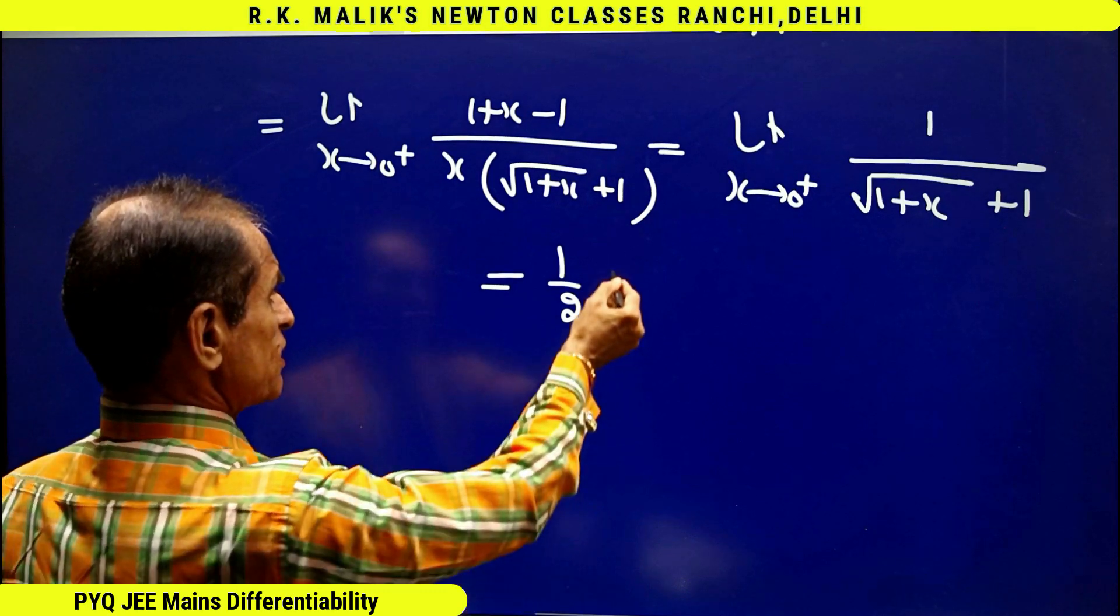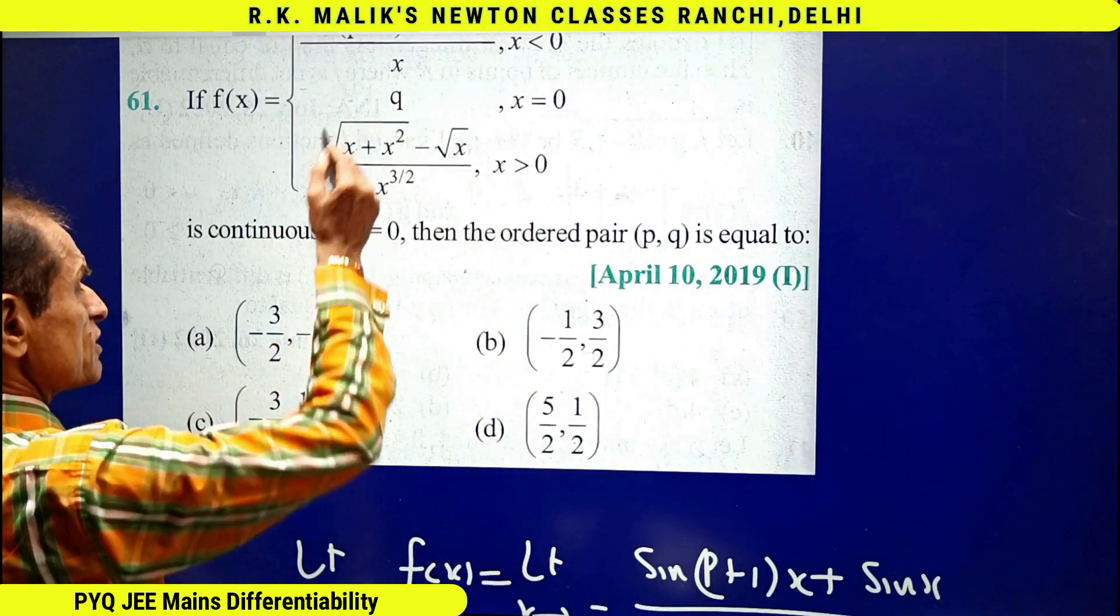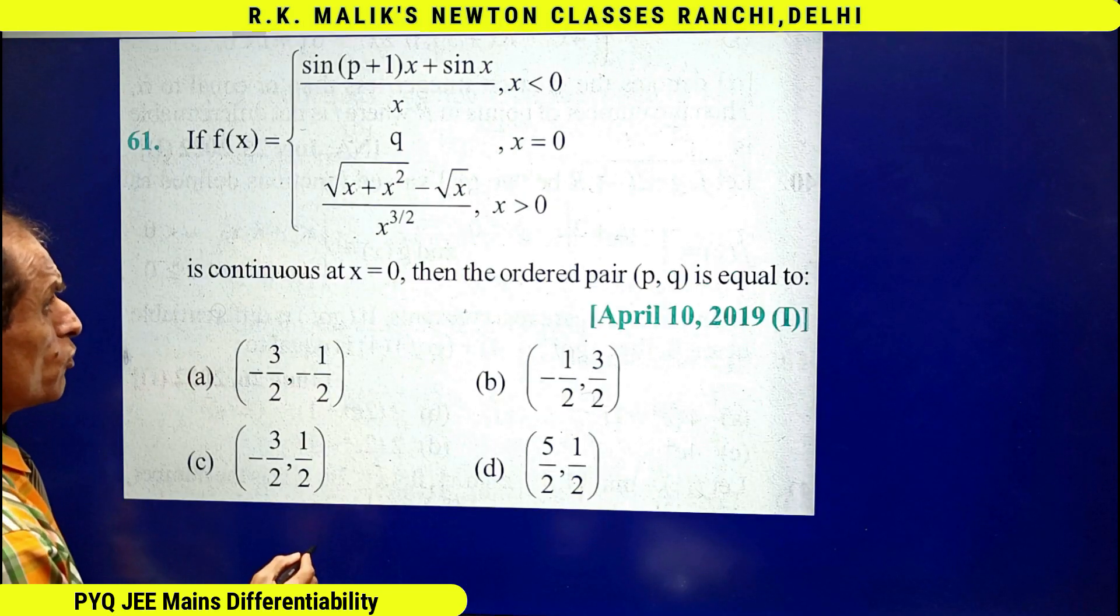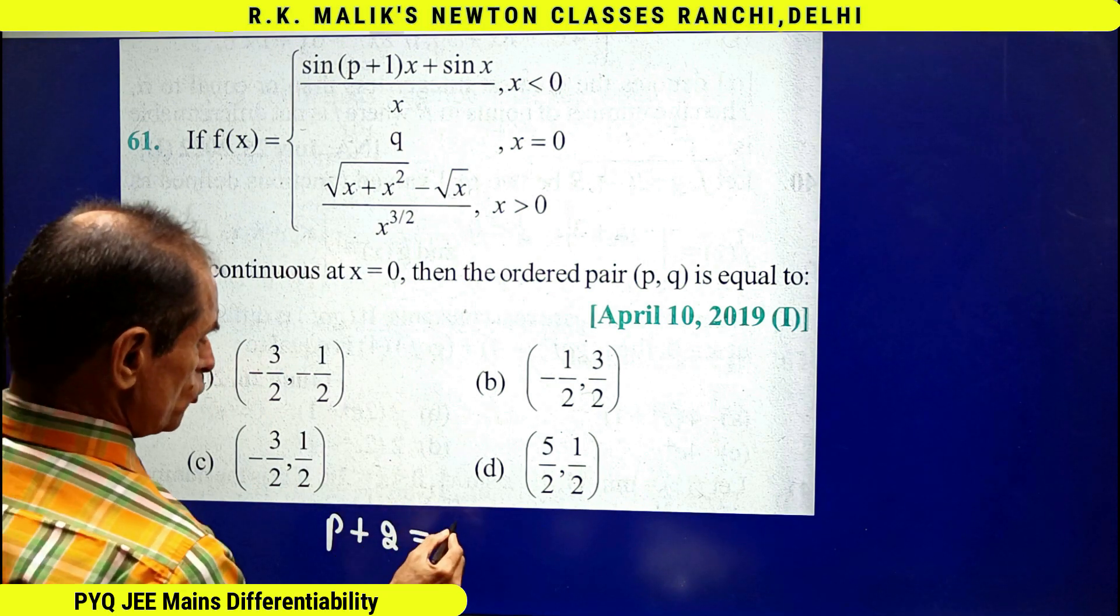As left hand limit was p+2, right hand limit is 1/2, and value of function is q, hence we will say the function is continuous at x = 0 if p+2 = q = 1/2.